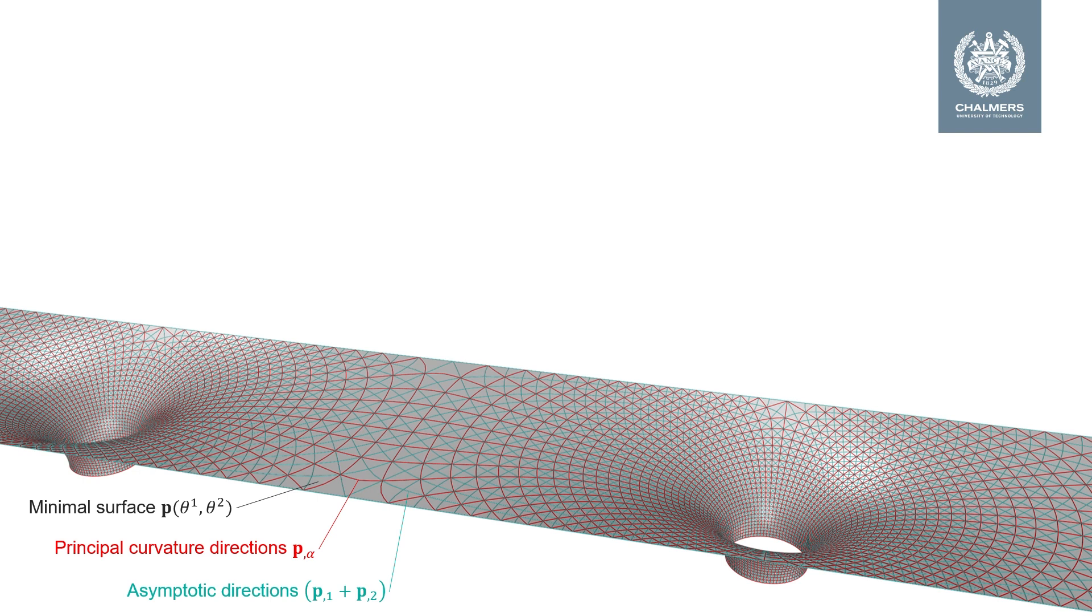This image depicts a minimal surface P where the red curves follow the principal curvature directions and the blue the asymptotic directions.